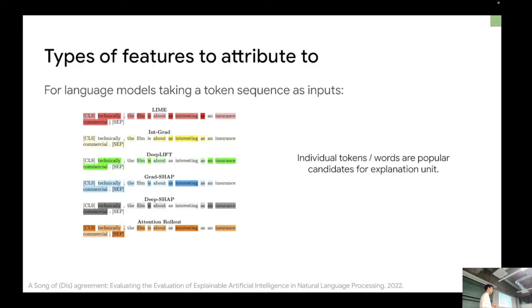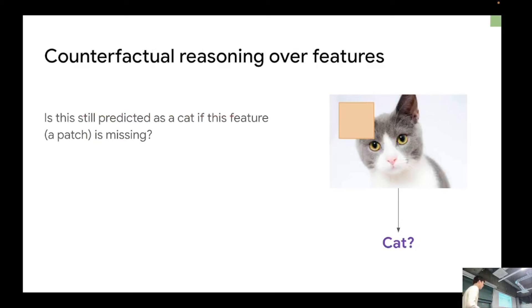The story is similar but slightly different for language models, because they take token sequences as input. If you try to attribute to the input for a language model, you can go back to the token space and say which part of the token sequence is driving the prediction.